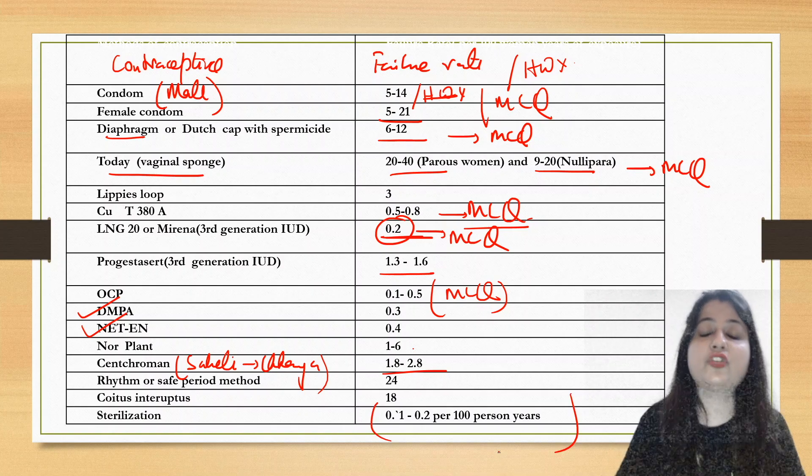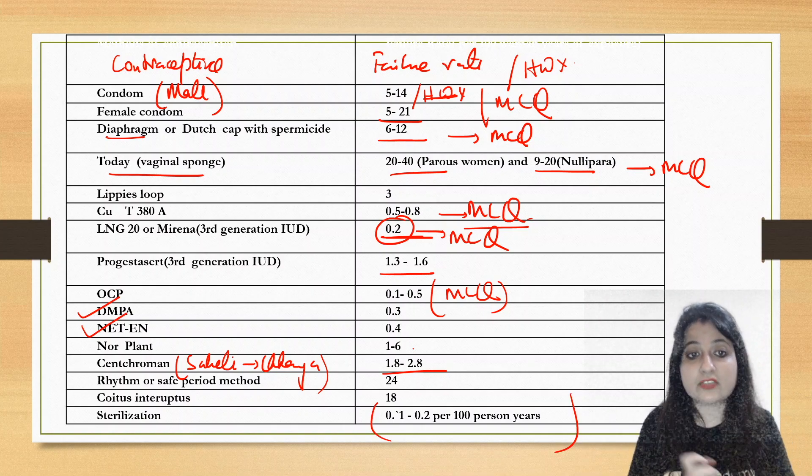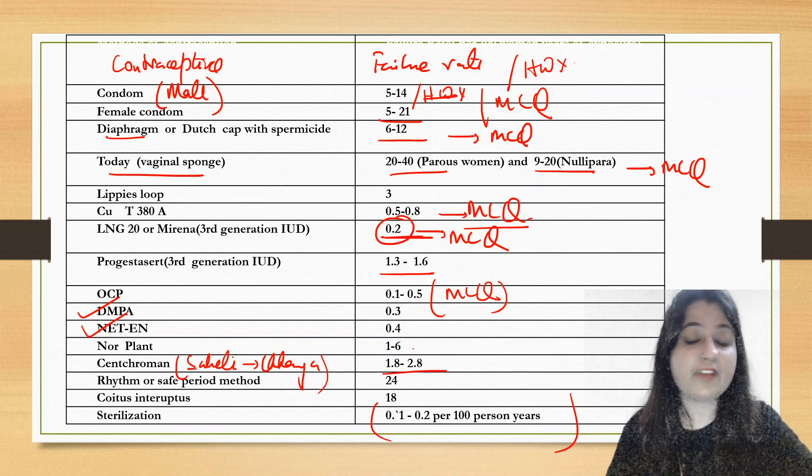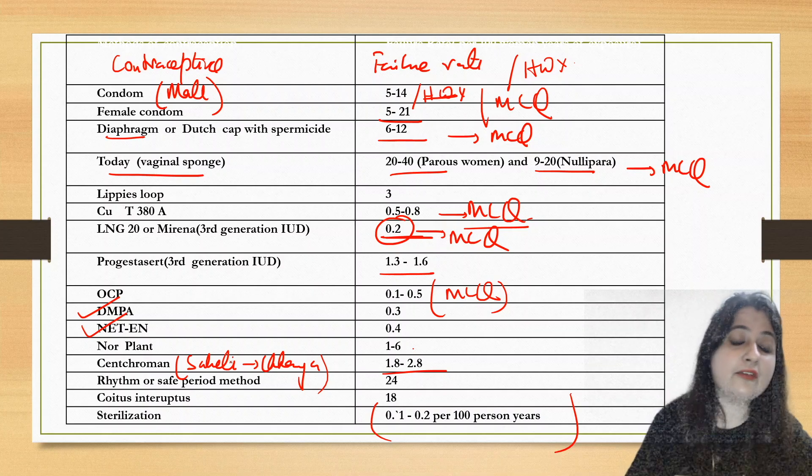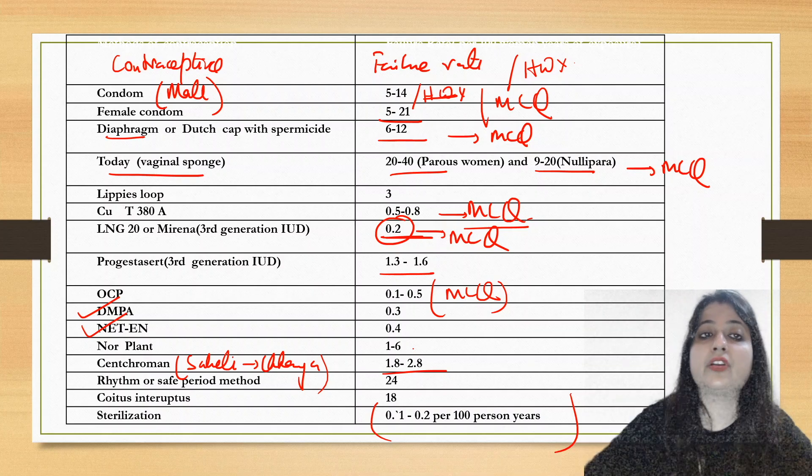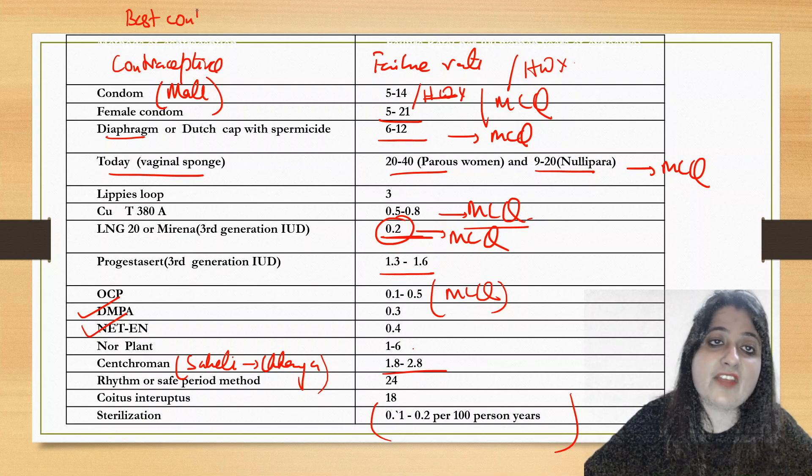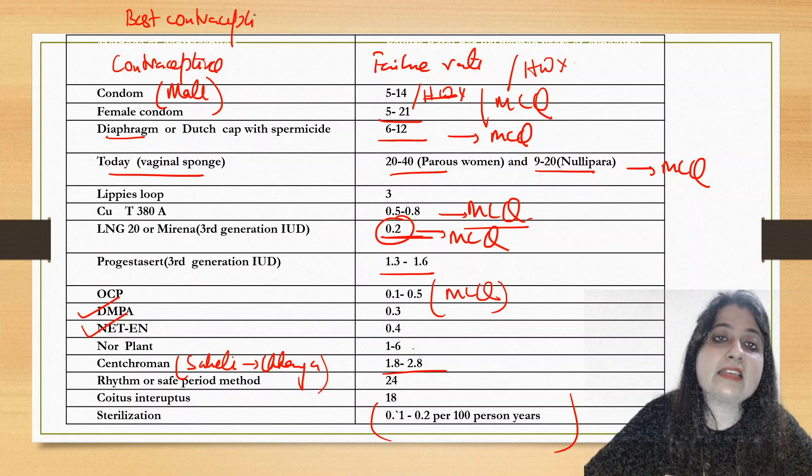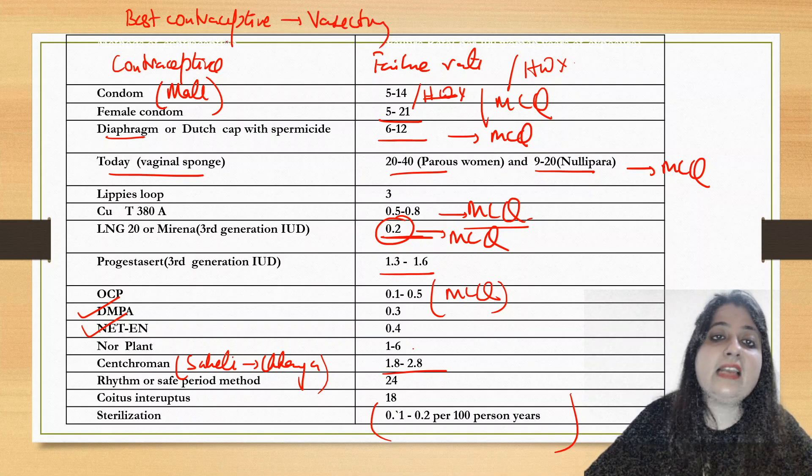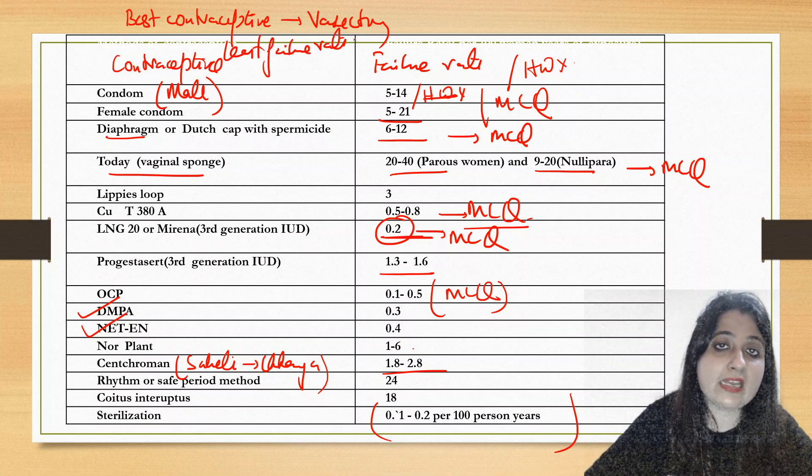Sterilization: least failure rate 0.1 to 0.2 per 100 woman years, in which most important is vasectomy. It has the least failure rate and vasectomy is the best contraceptive, if anybody asks you. The least failure rate is for vasectomy.